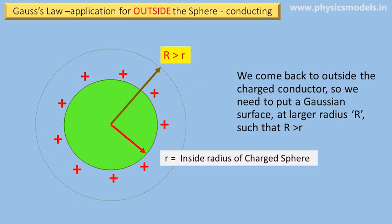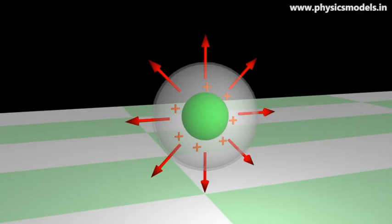We are now looking at finding the electric field outside the charged sphere, so we are back to the bigger Gaussian surface, where capital R is greater than small r. And this picture reinforces what we are talking about now.